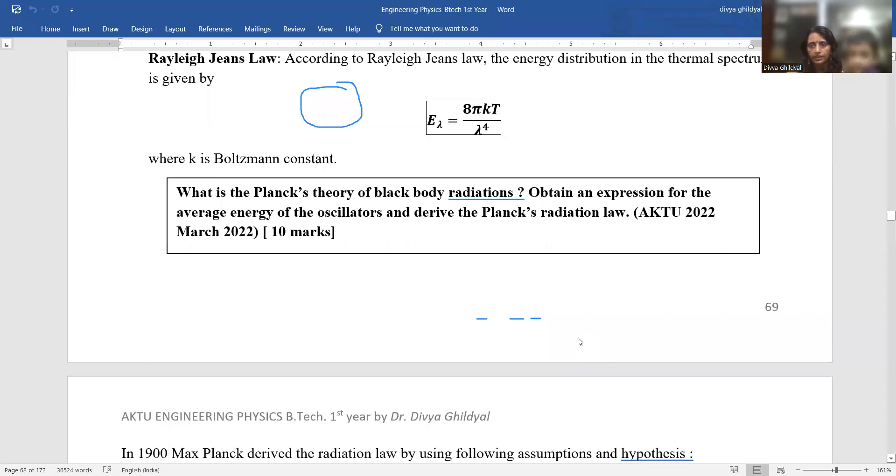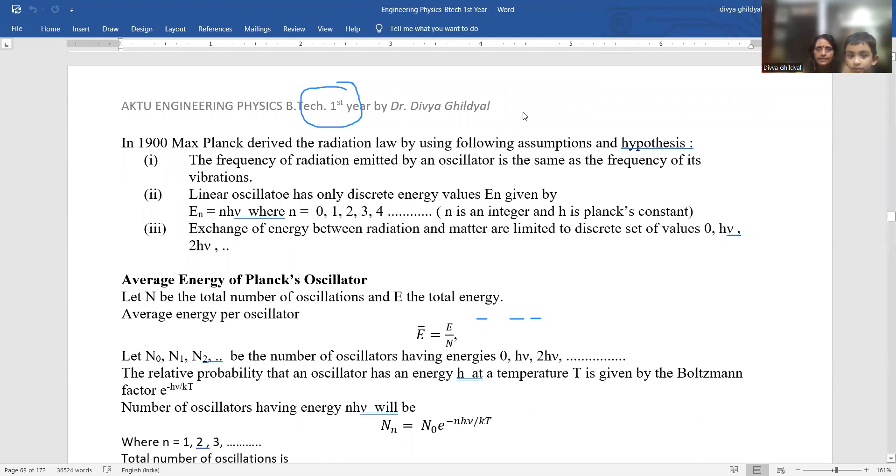Now, this derivation is important. It was asked in your 2022 paper: what is Planck's theory of black body radiation, obtain an expression for average energy of the oscillator and derive Planck's radiation law. This was asked in AKTU 2022 March paper, a 10 mark question from section C. We will derive this step-by-step. Please be ready with the printout of this page. I will tell you the derivation and you will be able to derive it with me.